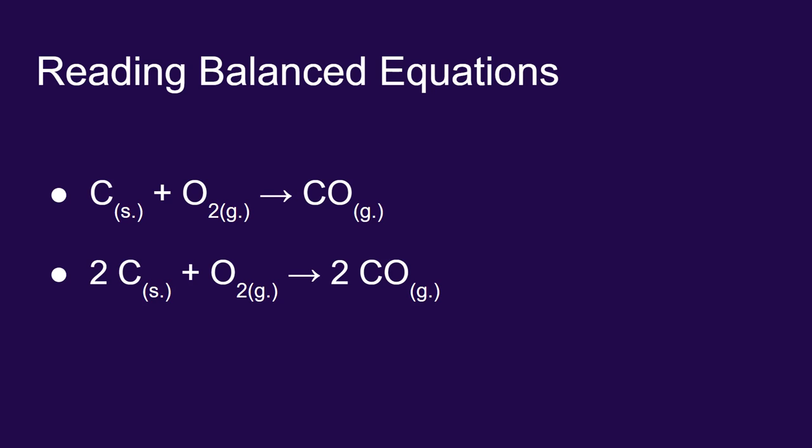In the last chapter when we learned to balance equations, we would say that two atoms of solid carbon combined with one molecule of oxygen gas to produce two molecules of carbon monoxide gas. But now that we know about moles, we can actually read this equation in a different way. If you multiply everything by Avogadro's number, this equation says two moles of solid carbon plus one mole of oxygen gas will create two moles of carbon monoxide gas.